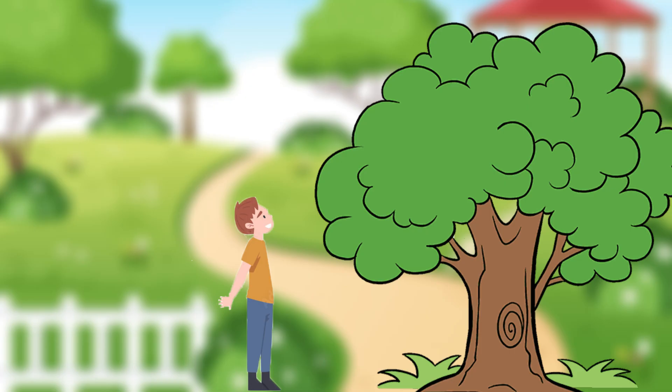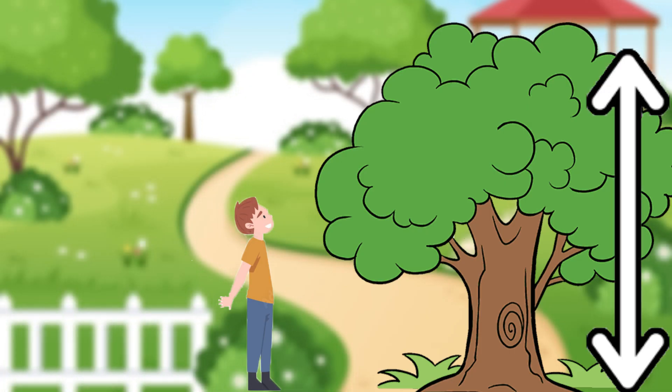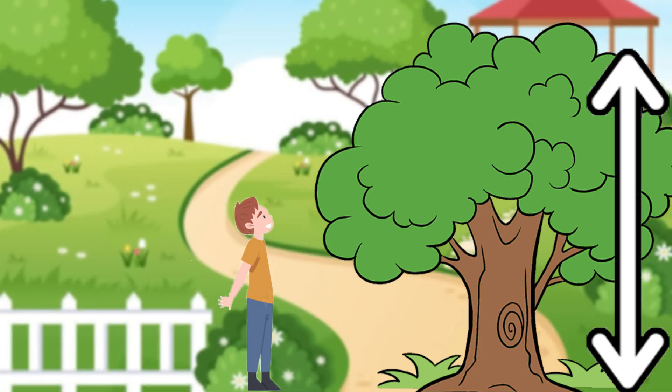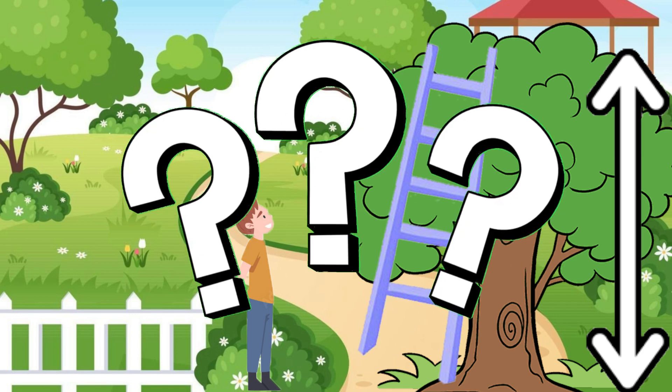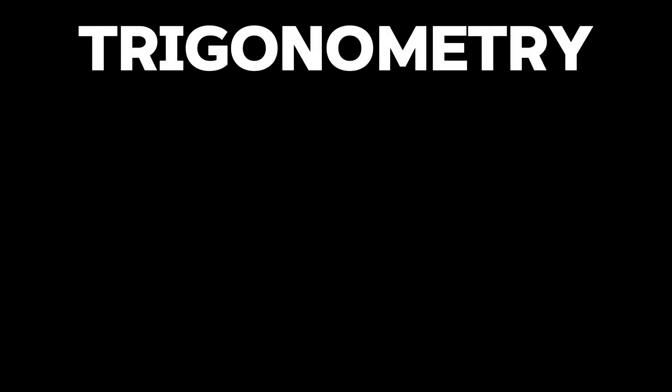Imagine you are in a garden standing by a tree and you want to find out how tall it is. What are the possible ways you can do this? A ladder might be helpful, but what if you don't have a ladder? This is where trigonometry helps us.